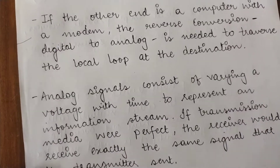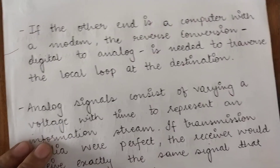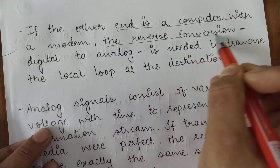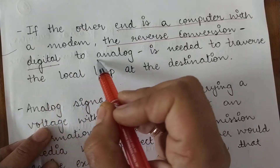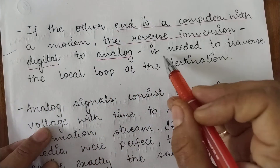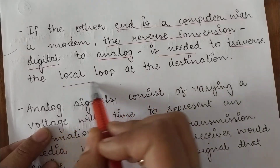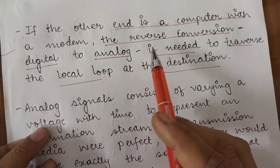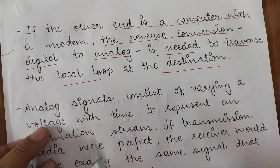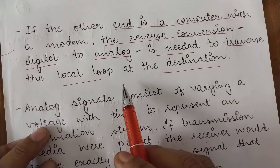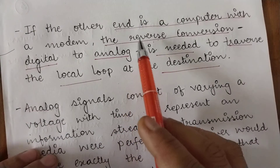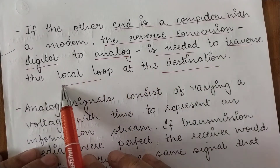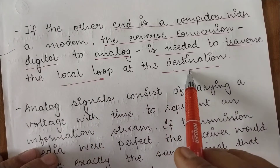At the telephone company's end office, the analog data is converted to digital form so it can be transmitted over the long-haul trunks. If the other end is also a computer with a modem, the reverse conversion is needed — from digital back to analog — to traverse the local loop at the destination.